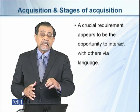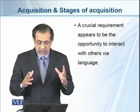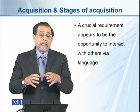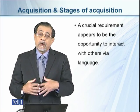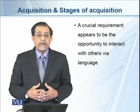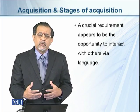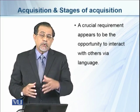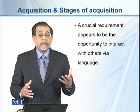A crucial requirement appears to be the opportunity to interact with others via language. The most important factor for a child learning language is having the opportunity to interact — to be among people who talk with the child and motivate them to learn. Right after birth, parents and people around the child begin talking to the child, which is very important. A child not exposed to this will not be able to learn human language or to speak.